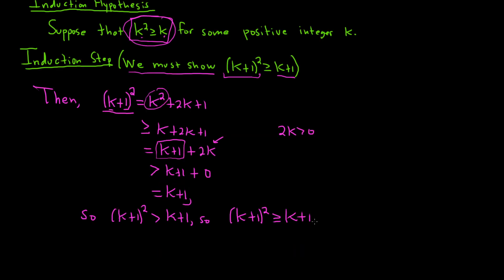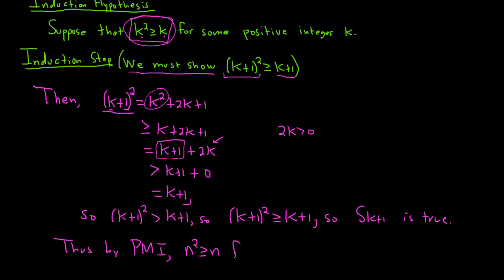So we have shown that s sub k plus 1 is true, and that completes the proof. Thus, by the principle of mathematical induction — PMI — n squared is greater than or equal to n for all positive integers n. That's just a way to finish your proof; I like to use a box with an X, other people use other symbols. I hope this video has been helpful.